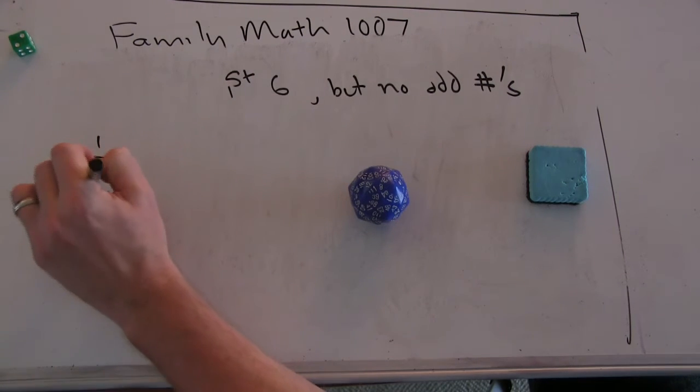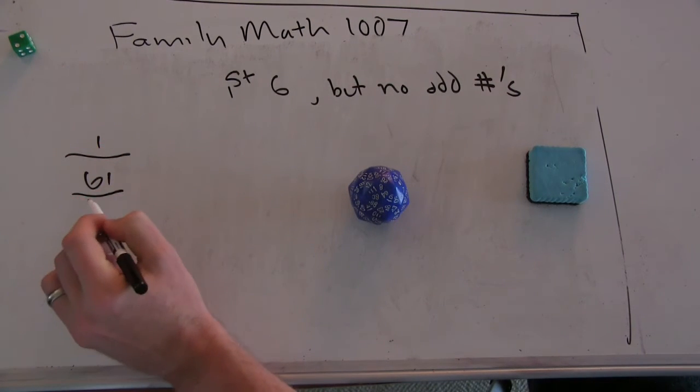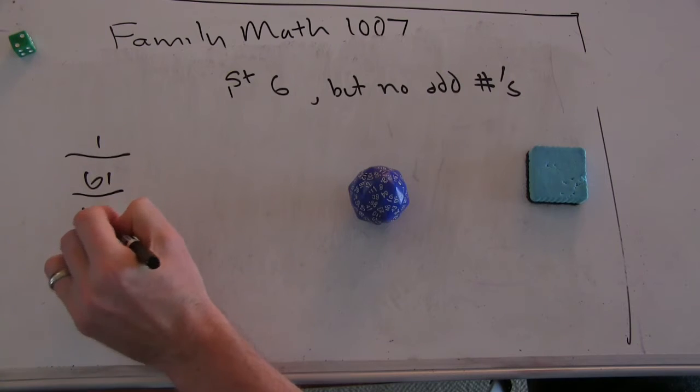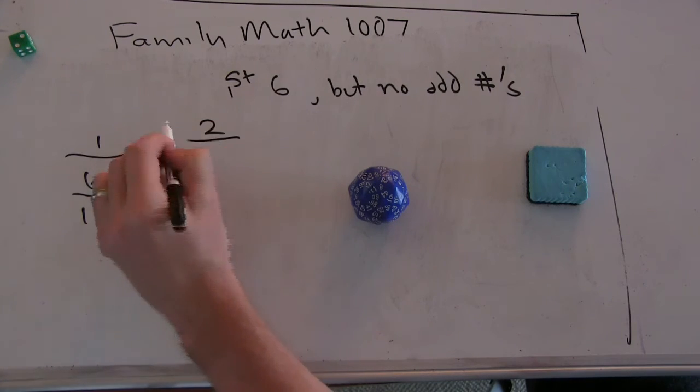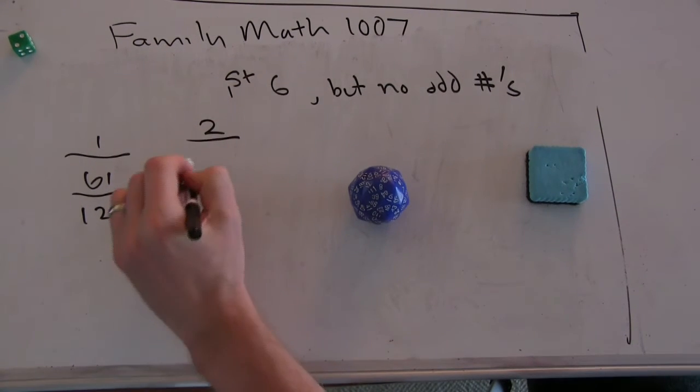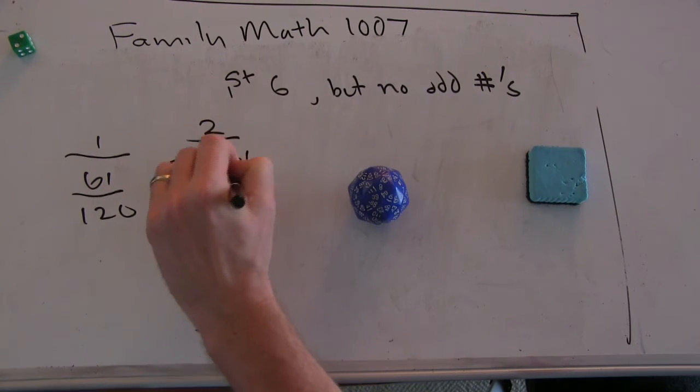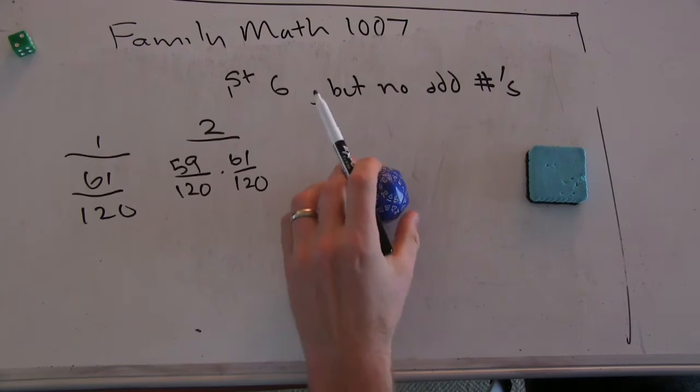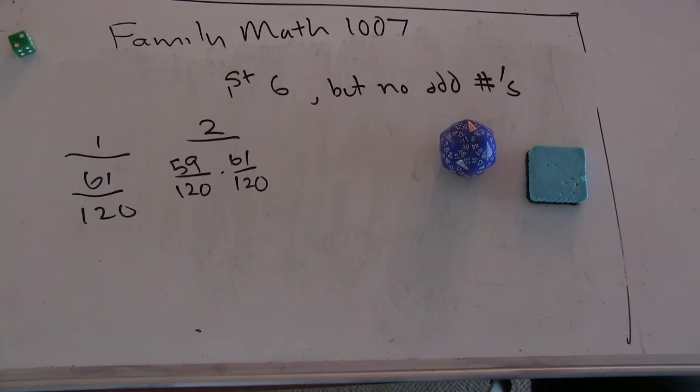So on round one, we get 61 out of 120. And on round two? So 59 out of 120 times 61. So our geometric series is just a hair more complicated, but it's the same general form.